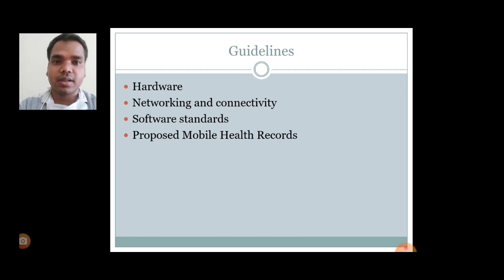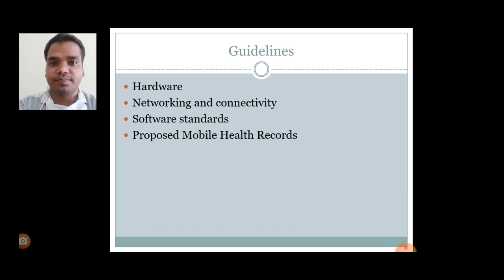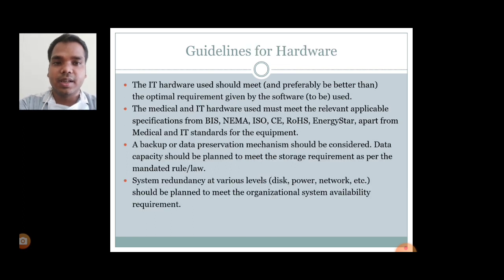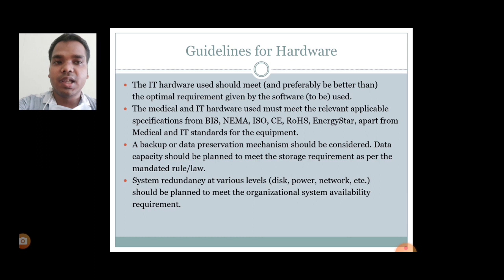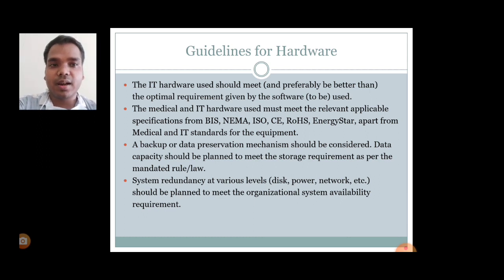Guidelines for EHR: first method is hardware, second is networking and connectivity, then software standards, then proposed mobile health records. In guidelines for hardware, the IT hardware should preferably meet better than the optimal requirements given by the software to be used. The medical and IT hardware used must meet the relevant applicable specifications from BIS, NEMA, ISO, etc.